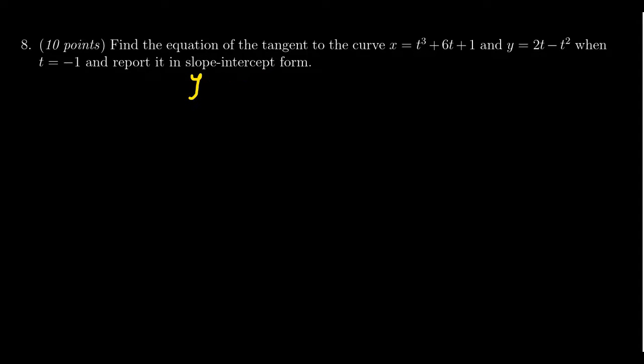But the standard equation for a tangent line is going to be y minus, we have our point of tangency, for which we're going to say y of t at that moment. This equals then the derivative dy over dx evaluated at some value for t and times that by x minus x evaluated at t. So we want to look for those things.